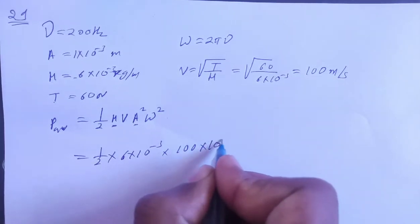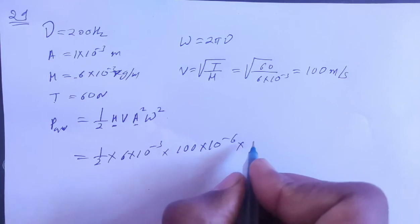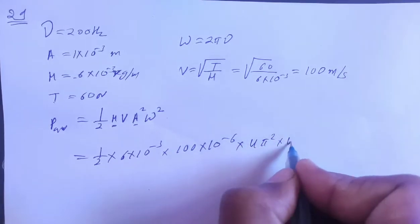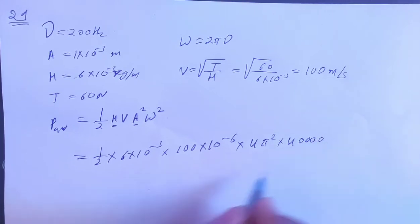6 times 10 to power minus 3, speed is 100, amplitude square is 10 to power minus 6, omega square is 4 pi square, nu square is 4, 0, 0, 0, 0.